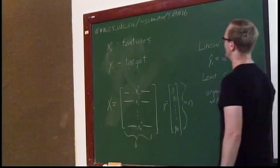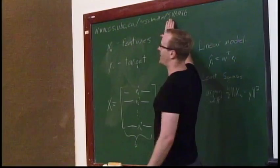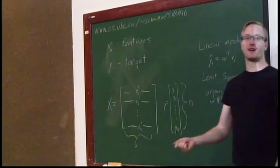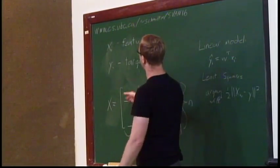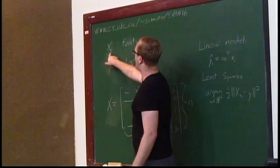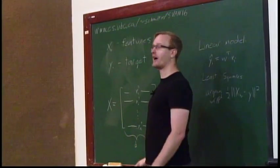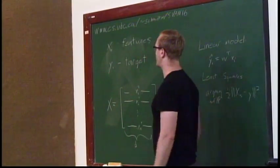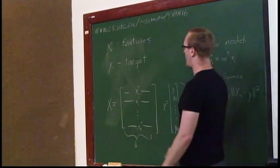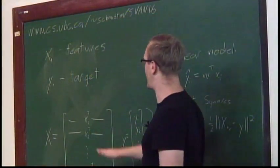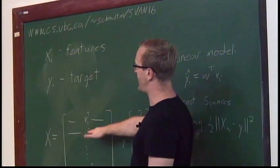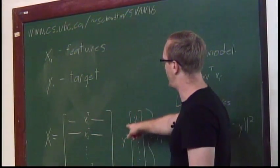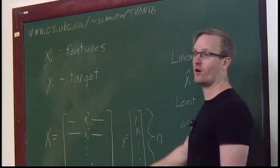I just wrote some things on the board so that you'll have them here as I go along. First is the website you can go to to download the slides. Just reminding you of the notation: XI as the features for example I, YI as the target for example I. We use capital X as a matrix that has the features, example I as the i-th row, and Y as the vector containing all of the target labels.